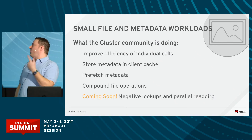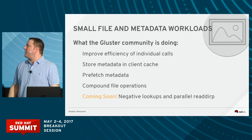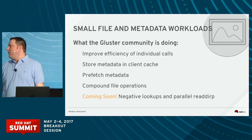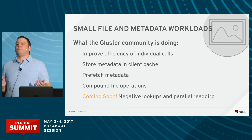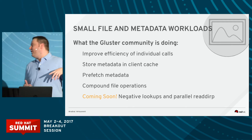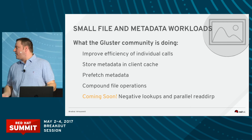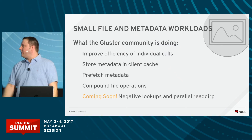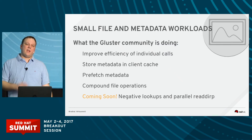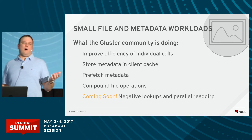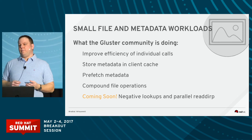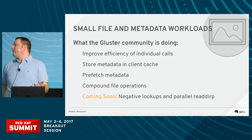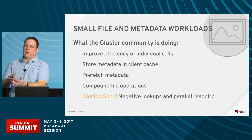Another thing we're trying to do to help improve that overhead is storing metadata in a client-side cache. Anything you can do to reduce trips over the wire from the client to the server is going to be a nice performance improvement. Latency is the hobgoblin of distributed systems. The next thing is prefetch and metadata — so we have our client-side cache. If we know that whenever we access a file we're going to need X, Y, and Z chunks of metadata, we send all of those metadata pieces with the previous call, and then they can get stored in cache and be there for future calls.